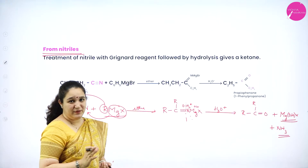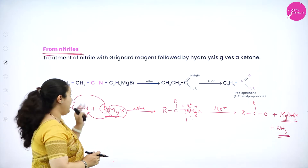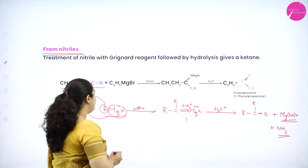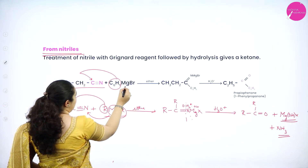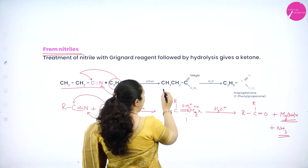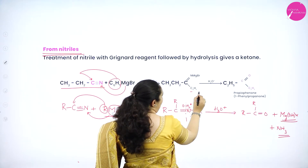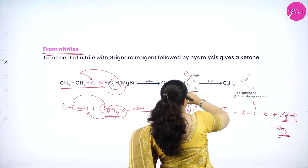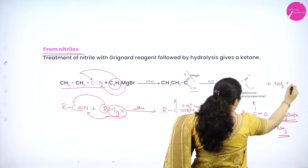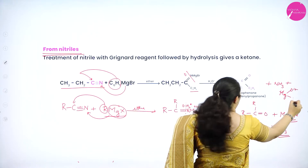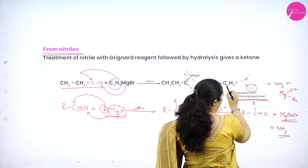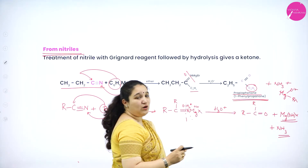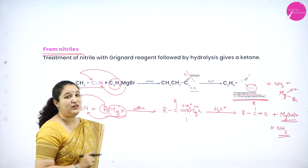Let's work through the example from the NCERT textbook. We take propanenitrile — CH3CH2CN — with phenyl magnesium bromide (C6H5MgBr) in the presence of ether. The phenyl group gets added to the carbon atom and MgBr gets added to nitrogen, giving CH3CH2–C(=NMgBr)–C6H5, which can be written as C2H5–C(=NMgBr)–C6H5. On hydrolysis, oxygen is added, nitrogen becomes NH3, and magnesium forms Mg(OH)Br. In the product you have the phenyl group and a three-carbon chain, so the name is propiophenone or 1-phenyl-1-propanone.